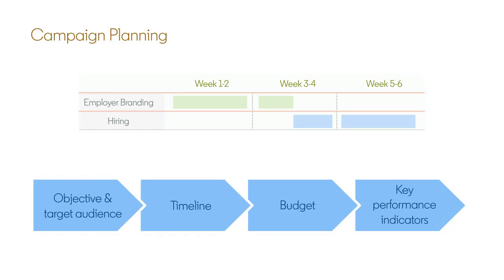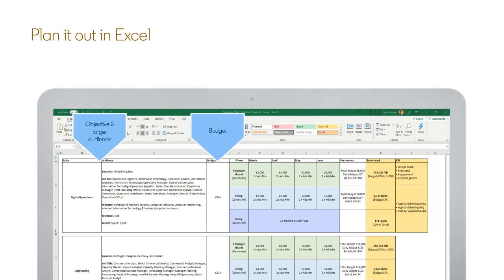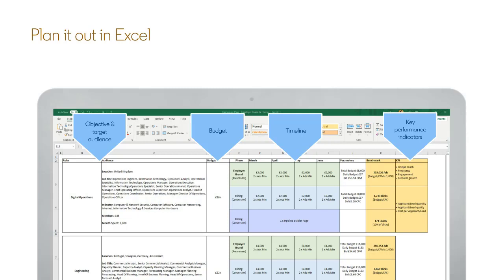Here you can see an example of a campaign plan with those four pillars — this template will be available to download from the webinar. We can see the audience is defined, the objectives are employer branding and hiring, the budget is indicated, the timeline is a four-month period, and key performance indicators are listed at the end. I'd recommend focusing on one specific primary KPI — whether that's follower growth or job applications — and optimising for that throughout your campaign.